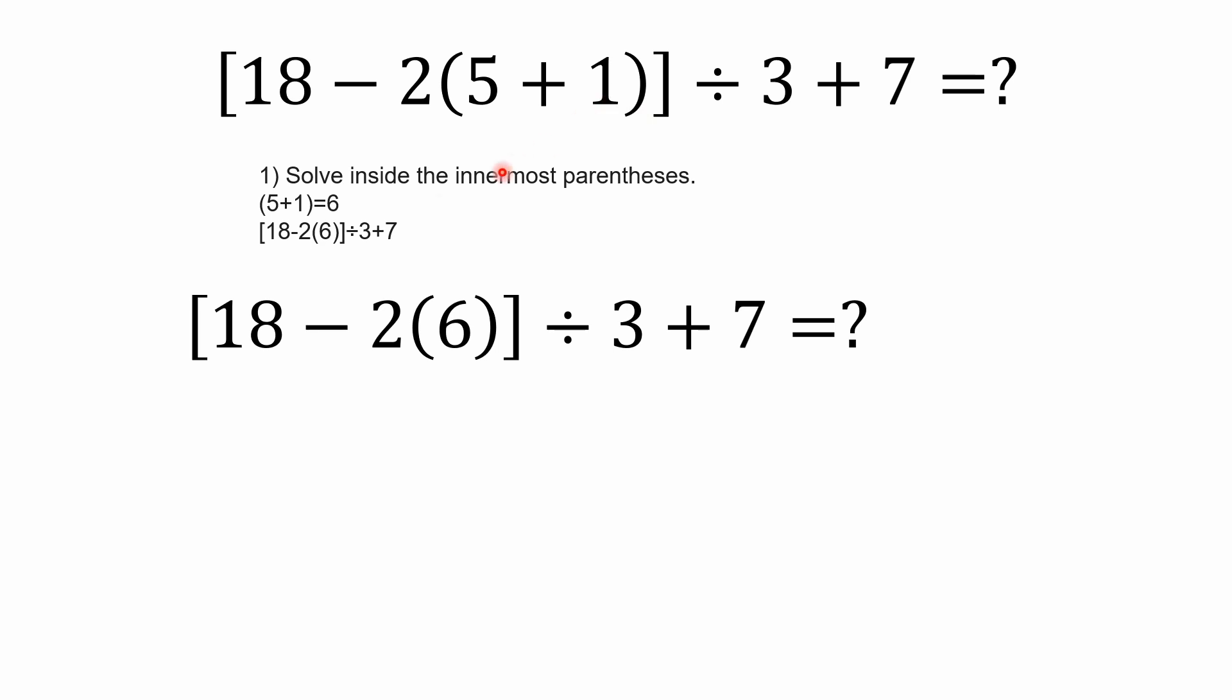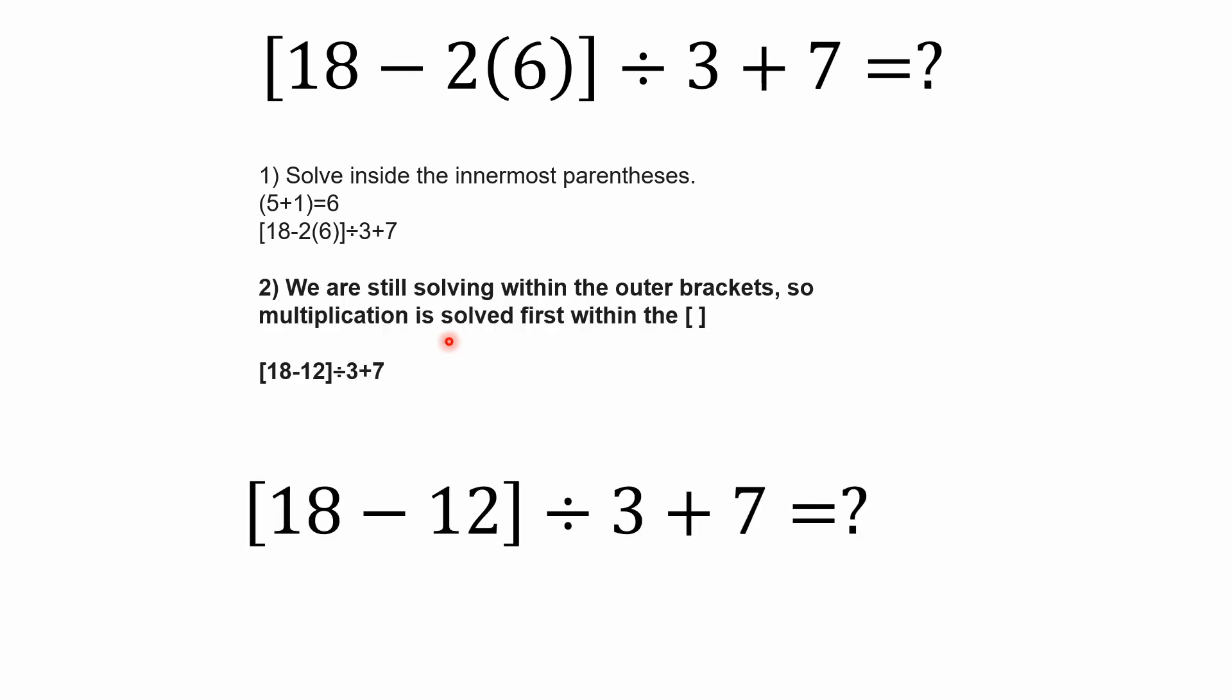So we need to resolve the innermost parentheses. Five plus one is six. So our very first step here, we're going to end up with 18 minus two times six inside of these outer brackets. So we're resolving this five plus one before we do anything else. That's the way it works. Now, if you remember what it means when we're talking about parentheses and brackets, these are nothing more than grouping symbols. We've really already taken care of the six. This is implicit multiplication. It's the same thing as me writing out two and then a multiplication symbol and six.